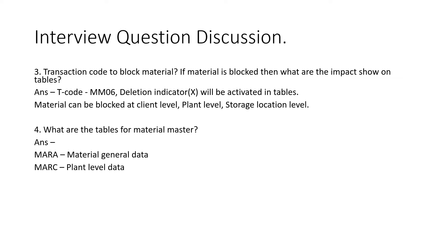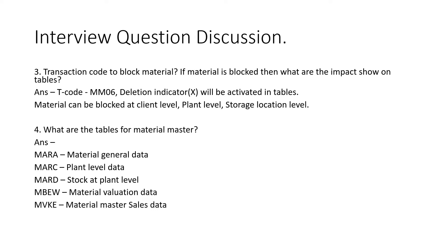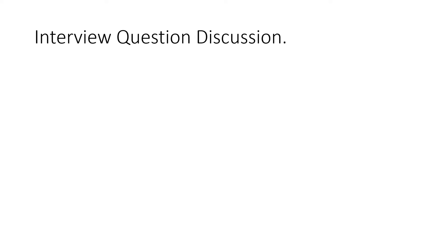The table MARC stores material plant-level data. The table MARD stores stock at the plant level. MBEW stores material valuation and accounting data. MVKE stores the sales data maintained in the sales view of the material master. And MARM stores the unit of measure data maintained in the material master.